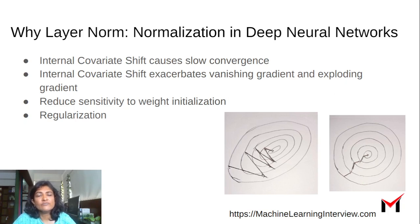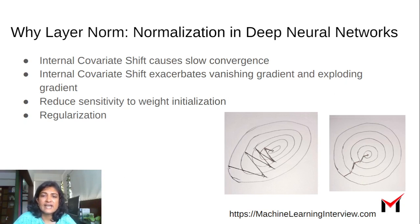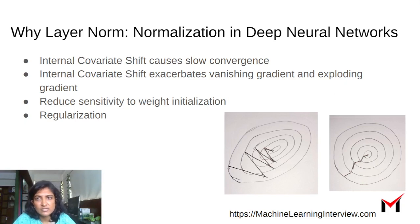Normalization is one of the techniques used to mitigate the effect of internal covariate shift. Because of internal covariate shift, there could be a challenge in terms of how fast our learning algorithm converges. There is also the aspect of sensitivity to weight initialization. Normalization helps with this process.